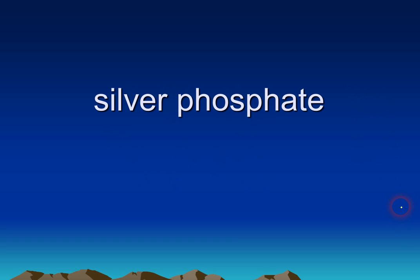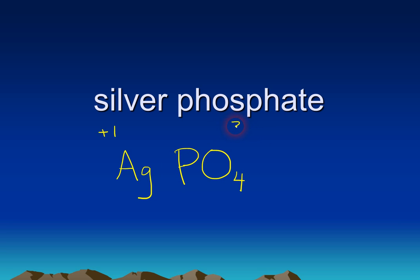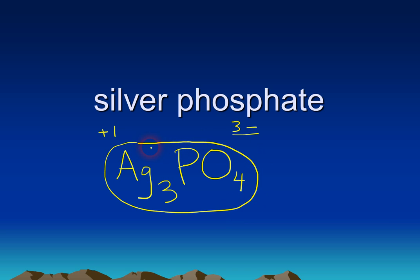Next example: silver phosphate. Silver is Ag with a positive one charge. Phosphate is the last ion on the right side of the chart — PO₄ — with a negative three charge. The charges don't cancel, so we swap: the three becomes the subscript on silver and the one is not written. The formula is Ag₃PO₄. Notice we do not need parentheses around PO₄ because we are not writing an additional subscript on it.